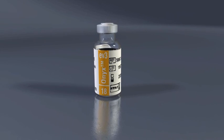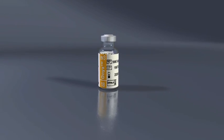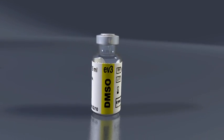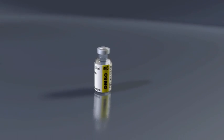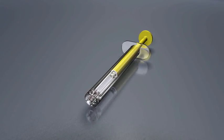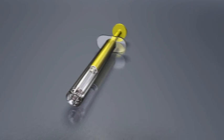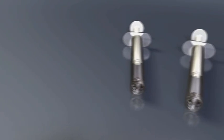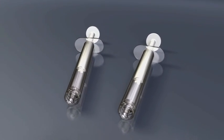The Onyx liquid embolic system consists of a 1.5 milliliter vial of Onyx, a 1.5 milliliter vial of DMSO, one yellow 1 milliliter DMSO syringe, and two white 1 milliliter Onyx delivery syringes.